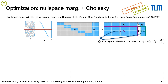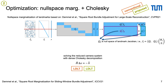The null space marginalization of landmarks is related to our earlier CVPR paper, where projecting the frame Jacobian JP onto the null space Q2 of the landmark Jacobian J eliminates the landmark state. Unlike in our previous work on large-scale bundle adjustment, here we only have a small number of camera states in the optimization window. That is why instead of PCG, we use Cholesky decomposition on the normal equations of the reduced camera system.